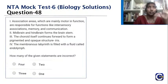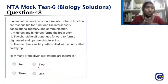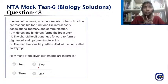Next is a question asking how many of the given statements are incorrect. The statements are: (1) association areas which are mainly motor in function are responsible for inter-sensory associations, memory and communication; (2) midbrain and hindbrain form the brainstem; (3) the choroid itself continues forward to form the pigmented and opaque structure iris; (4) the membranous labyrinth is filled with a fluid called endolymph. We need to identify the incorrect ones.